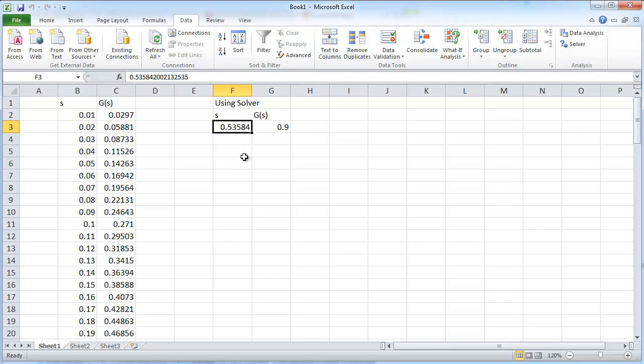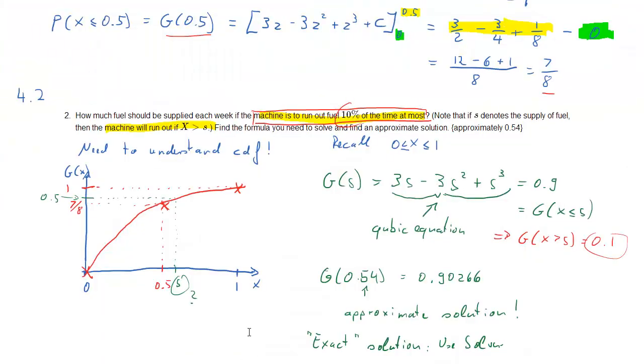The best value Excel can find is 0.53584. So the exact solution is 0.53584.